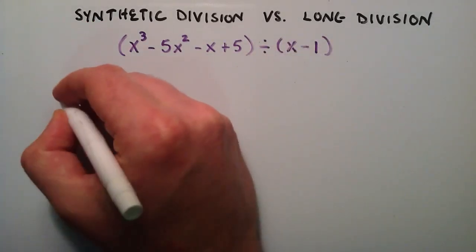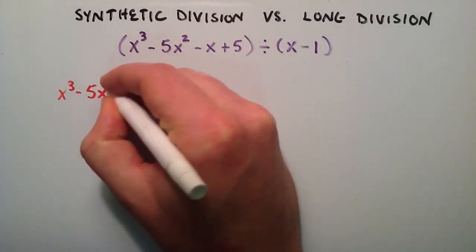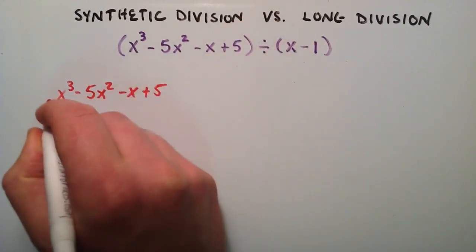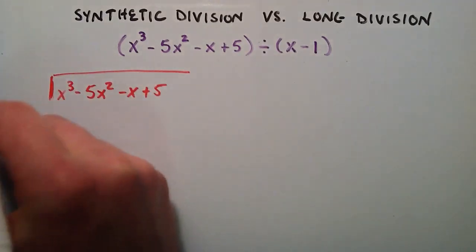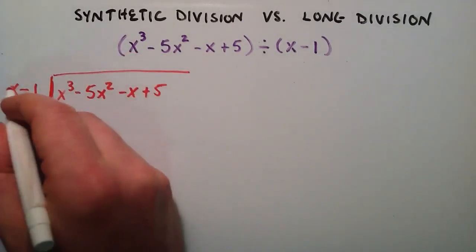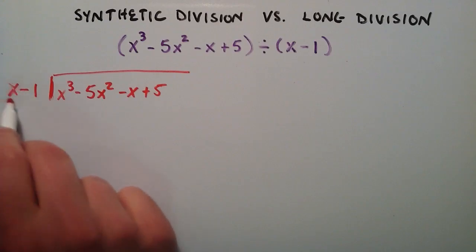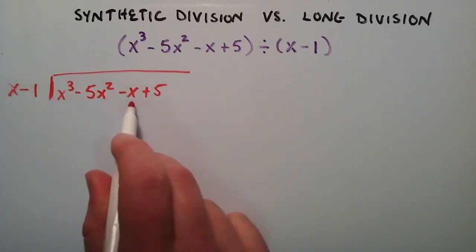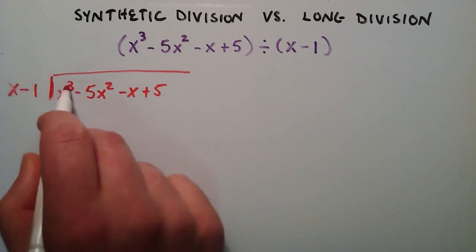To do this problem by long division, we're going to write down x to the third minus five x squared minus x plus five, which is this part here. And then we put that underneath our little division symbol here, and we're going to write the x minus one on the outside. The next step is to look at the highest term on each polynomial — the highest power here is x, and this one is x to the third.